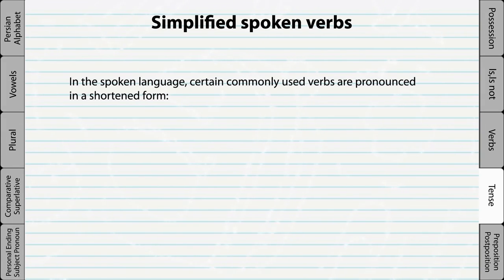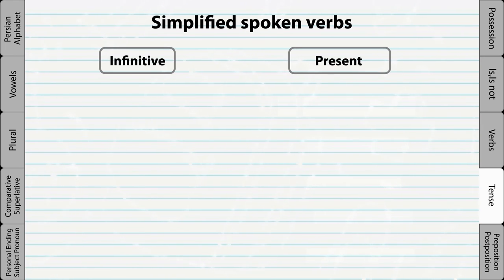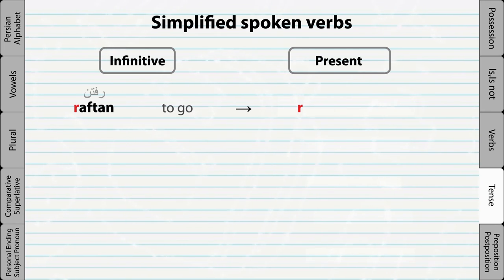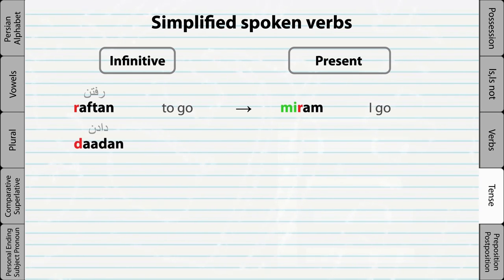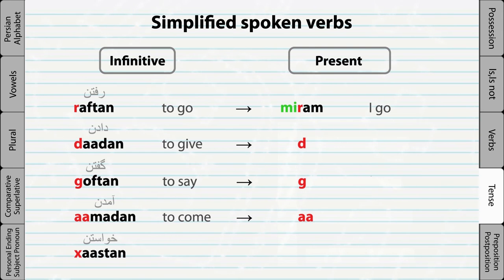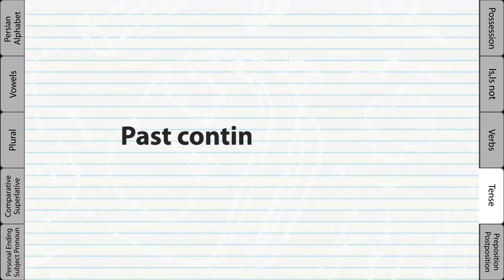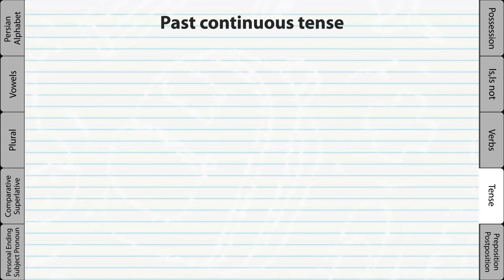In spoken Persian, for the present tense, certain commonly used verbs are pronounced in a shortened form. For example, the verb 'rafdan' meaning 'to go' is shortened to only its very first letter 'r.' Then, just like any other present tense, we add the prefix 'me' at the beginning and add the personal ending to the end. If we add the prefix 'me' to a past conjugated verb, we will get the past continuous tense.